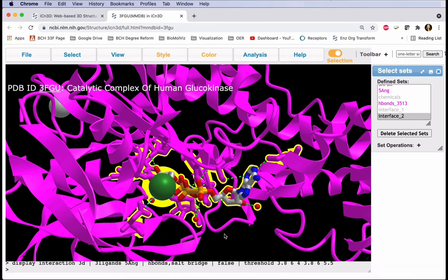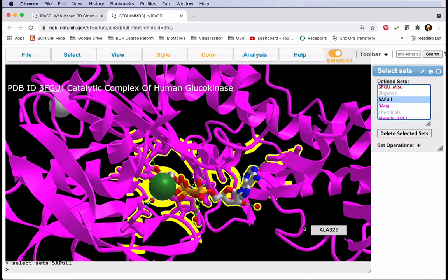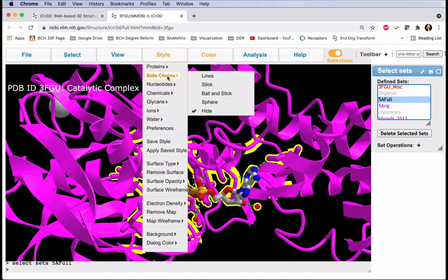To show our entire five angstrom active site as sticks, we'll select that in our menu, five angstrom full. We'll select that in our Select Sets pop-up menu. Now in the Style menu, Side Chains, Stick.